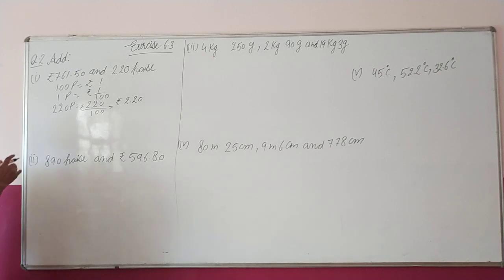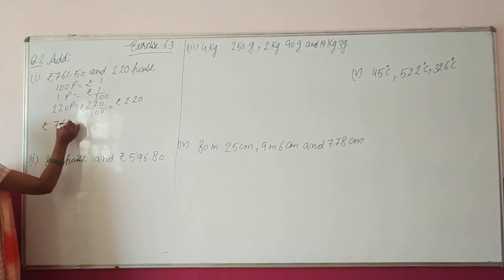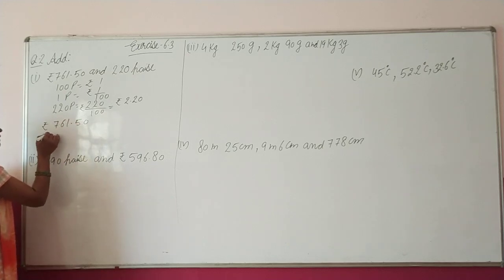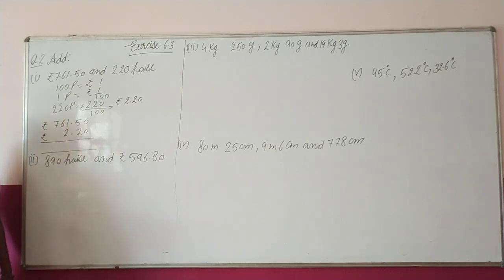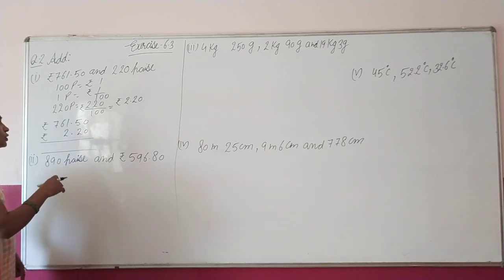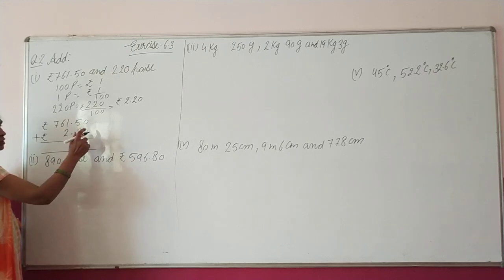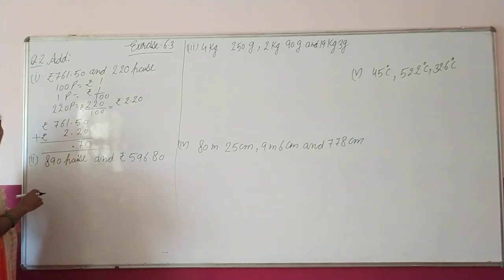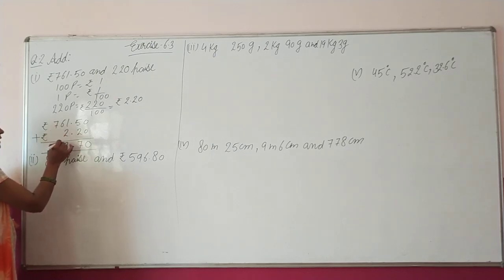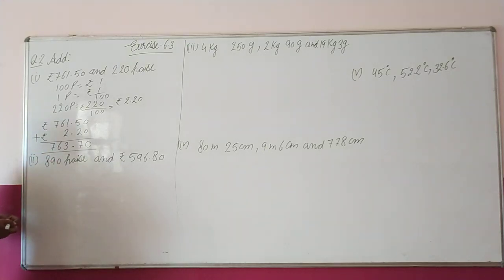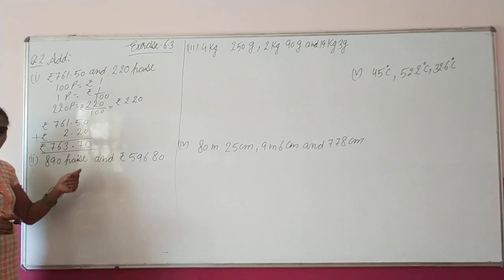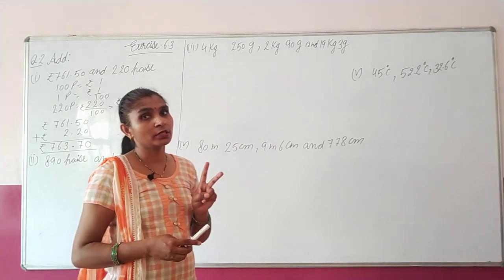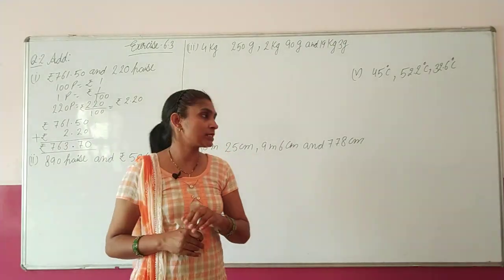Now we have to add both numbers: Rupees 761.50 and Rupees 2.20. The decimals of both numbers must align at the same place. So: 0+0=0, 5+2=7, then place the decimal, 1+2=3, then 6 and 7. The answer we get is Rupees 763.70 — that is, 763 rupees 70 paise. Remember, paise are always written as 2 digits after the decimal.